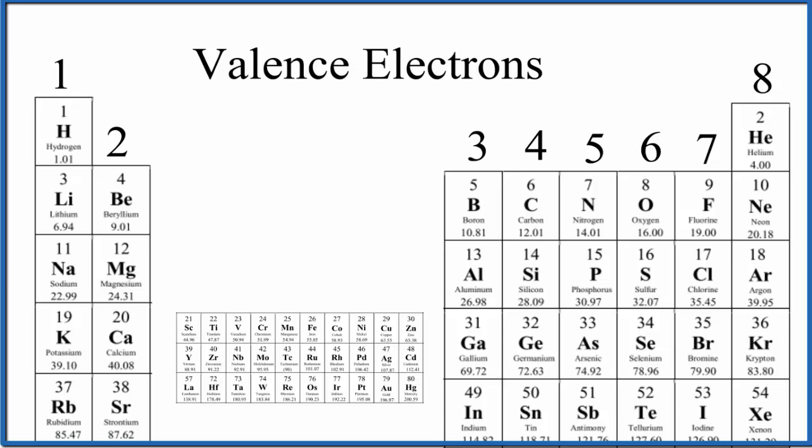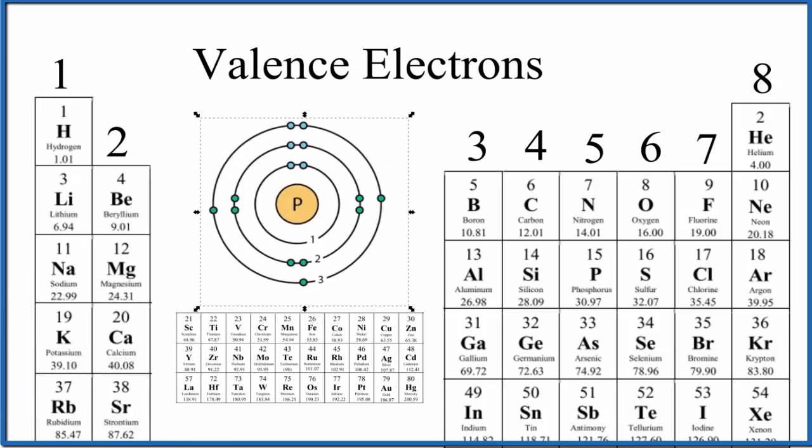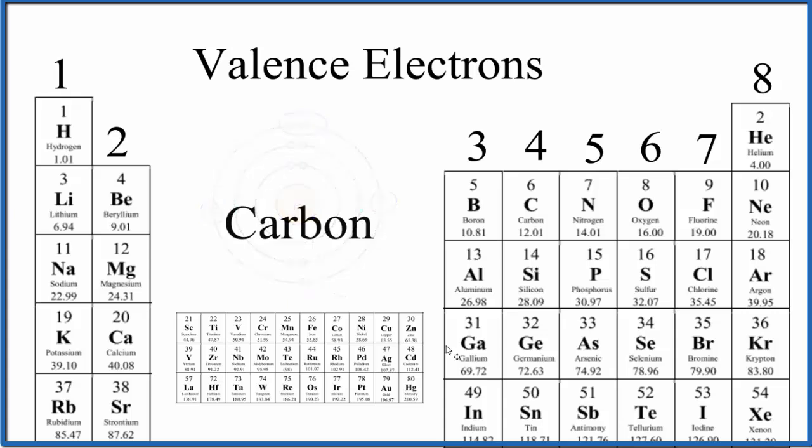Let's do one more and then you can practice. Let's look at phosphorus. So phosphorus, that's in group 15, sometimes called 5a, and these elements here have five valence electrons. So if you look at phosphorus, these energy levels are full, and then we have one, two, three, four, five valence electrons for phosphorus. And again, these are the electrons that are available to form chemical bonds. So pause and give it a try.